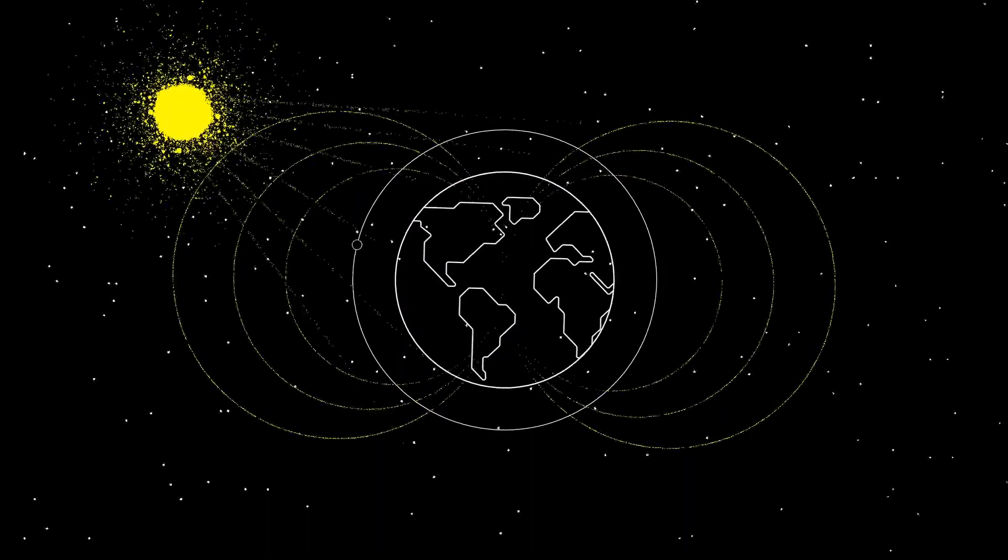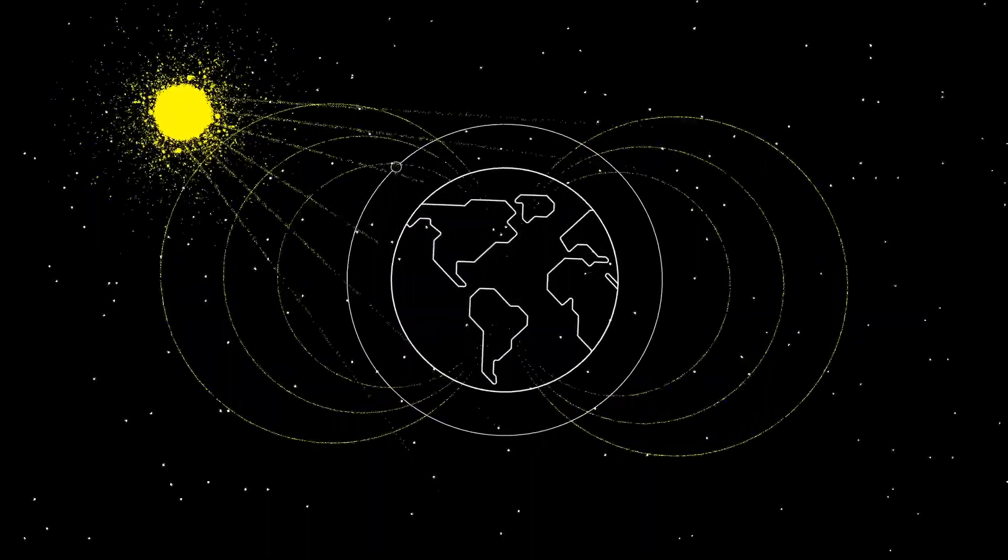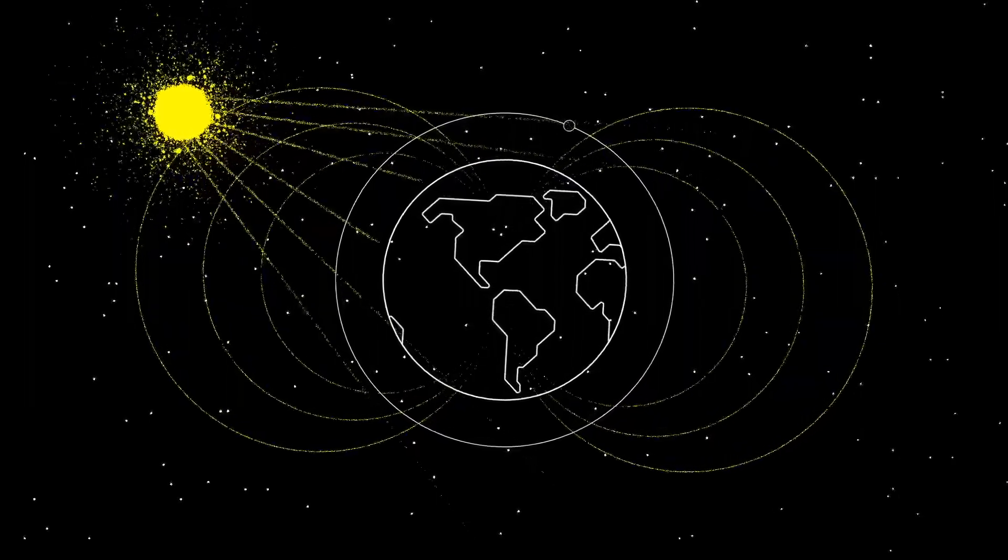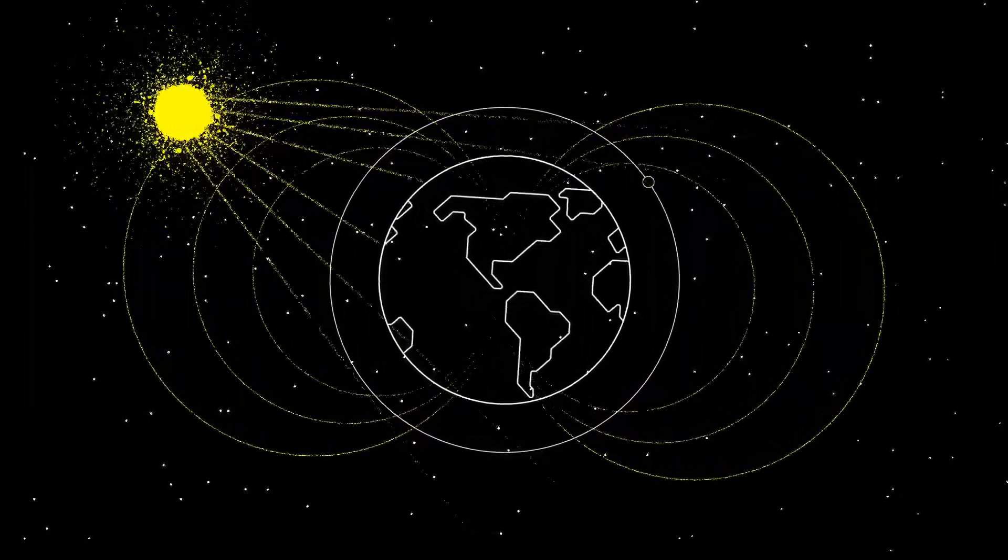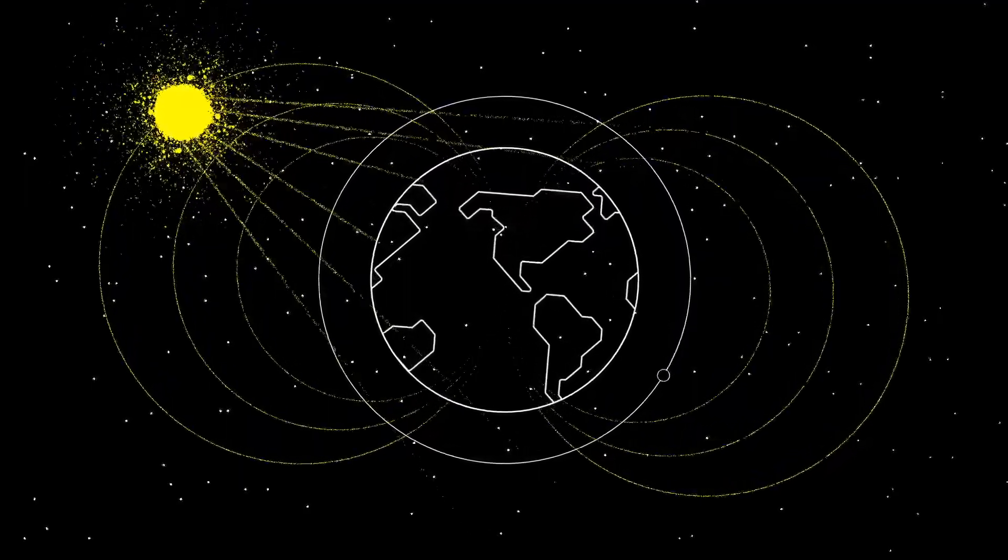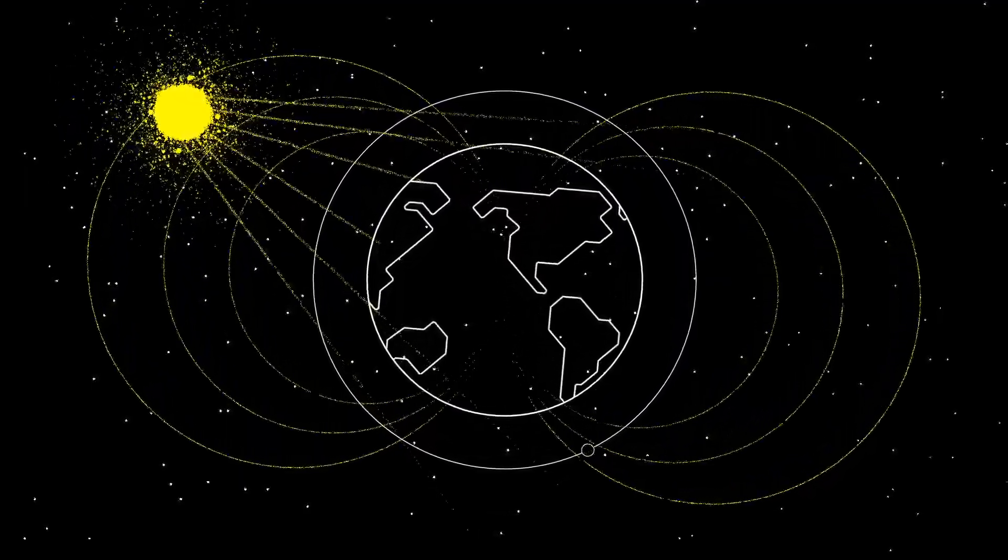Sun sensors are photodiodes that measure light intensity. By putting these sensors in several places surrounding the satellite, we can measure sunlight on each sensor, giving us the direction of the sun. That, combined with location data, can give us a pointing accuracy of 10 degrees or less.